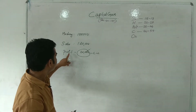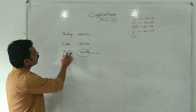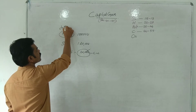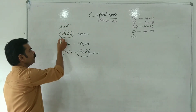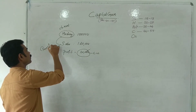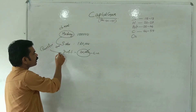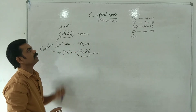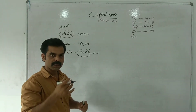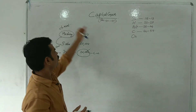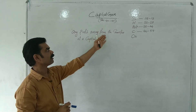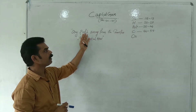Any profit arising from the transfer of a capital asset — such as machinery — is called capital gain. This is the basic definition of capital gain.